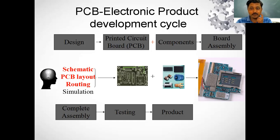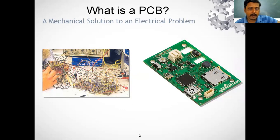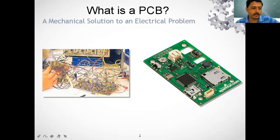PCB stands for Printed Circuit Board. It is a mechanical solution to an electrical or electronic problem. Without PCB, you have to use a large number of wires and every time it gets very complicated if you have to rectify an error. This board has different components mounted on it — that is why it is called a mechanical solution to an electrical problem. The circuit connects components through the board. It is made of alternating layers of conducting and insulating material — conducting material carries electricity, while insulating material insulates from other things.